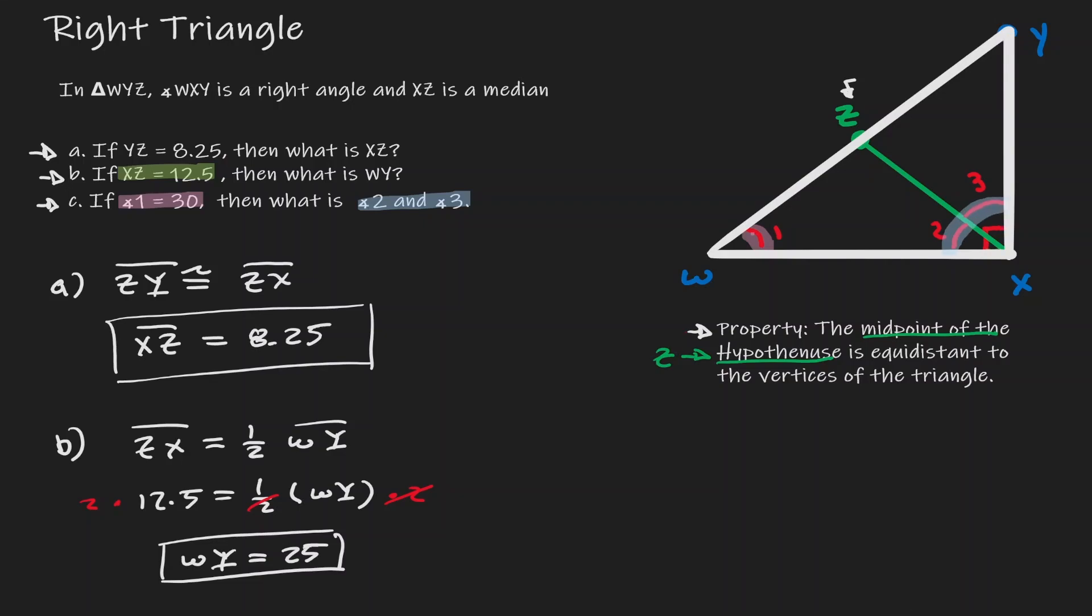Now again we want to go back to the property that we know here. We know that the midpoint is equidistant to all the vertices, which again we're saying that point Z is equidistant to point W, point Y, and point X.